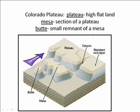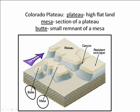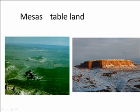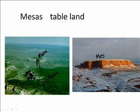As a plateau is cut by its canyons, chunks of the plateau are separated from the plateau, and they are called mesas. A smaller chunk of the plateau left behind is a butte, a small remnant of a mesa. In this diagram, you can see a plateau in the foreground and a mesa behind it. This could be called a tabletop mountain or a mesa.